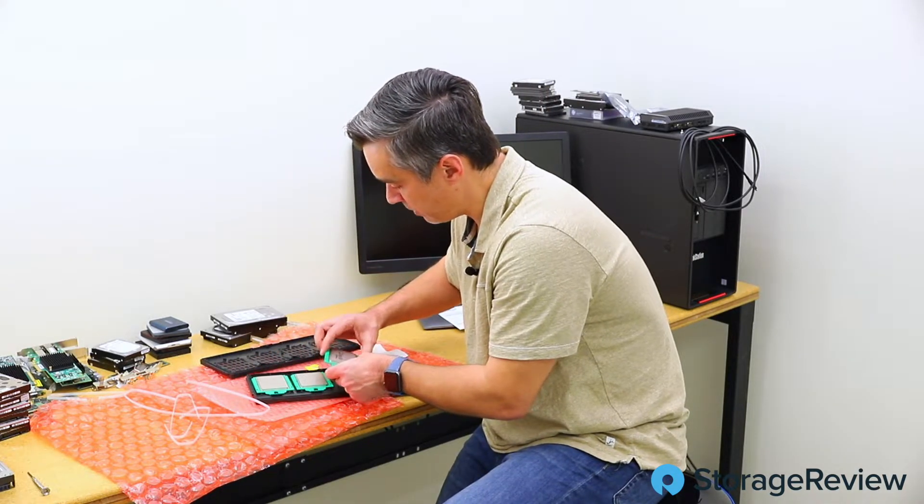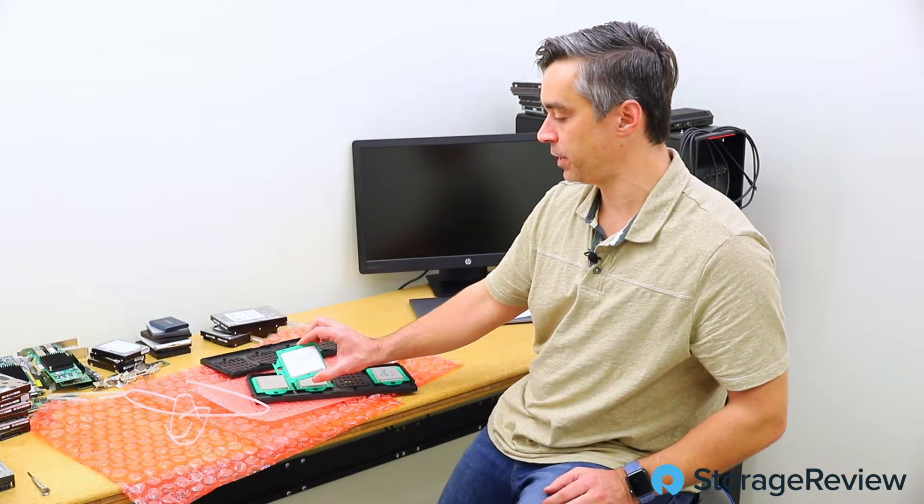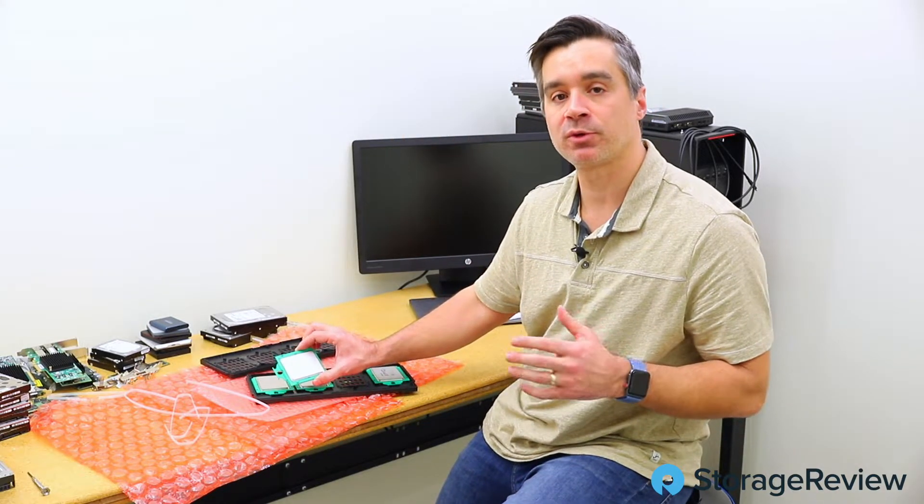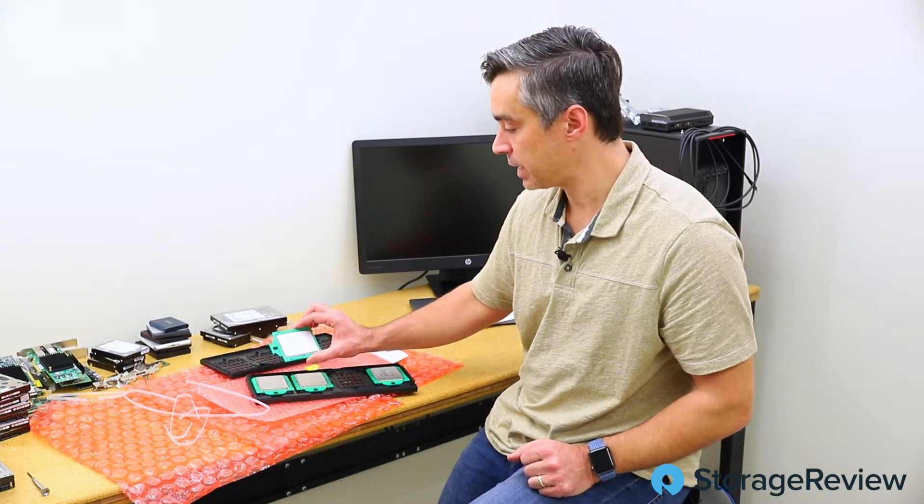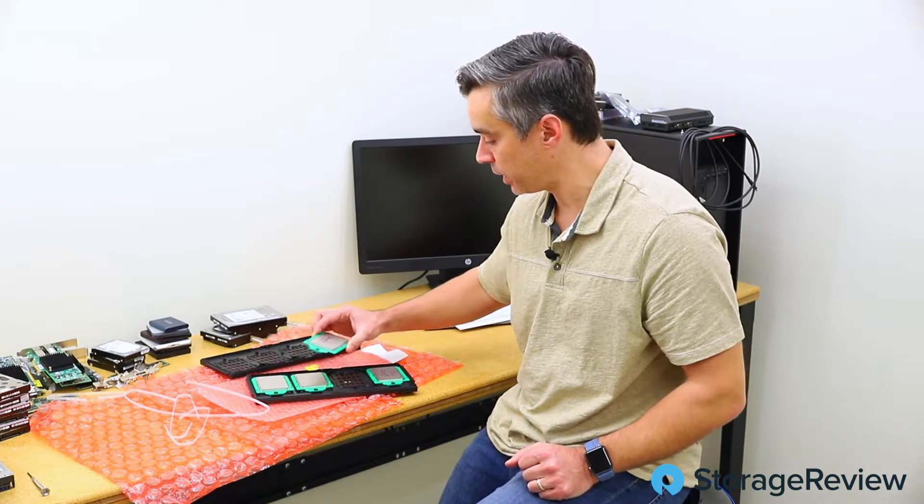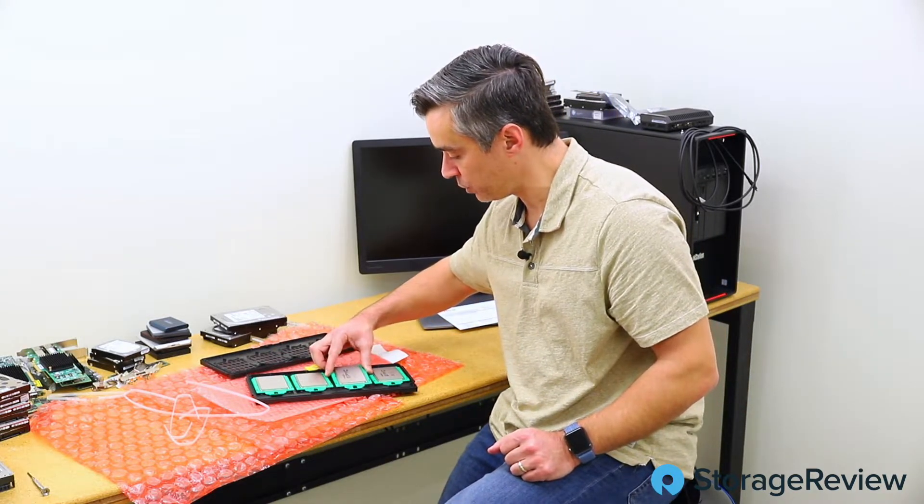The 7502P, this fellow here, the P means it's designed for a single proc system. So we can use this one only in single proc systems. So this is a nice one, a 32 core one we'll use as well.